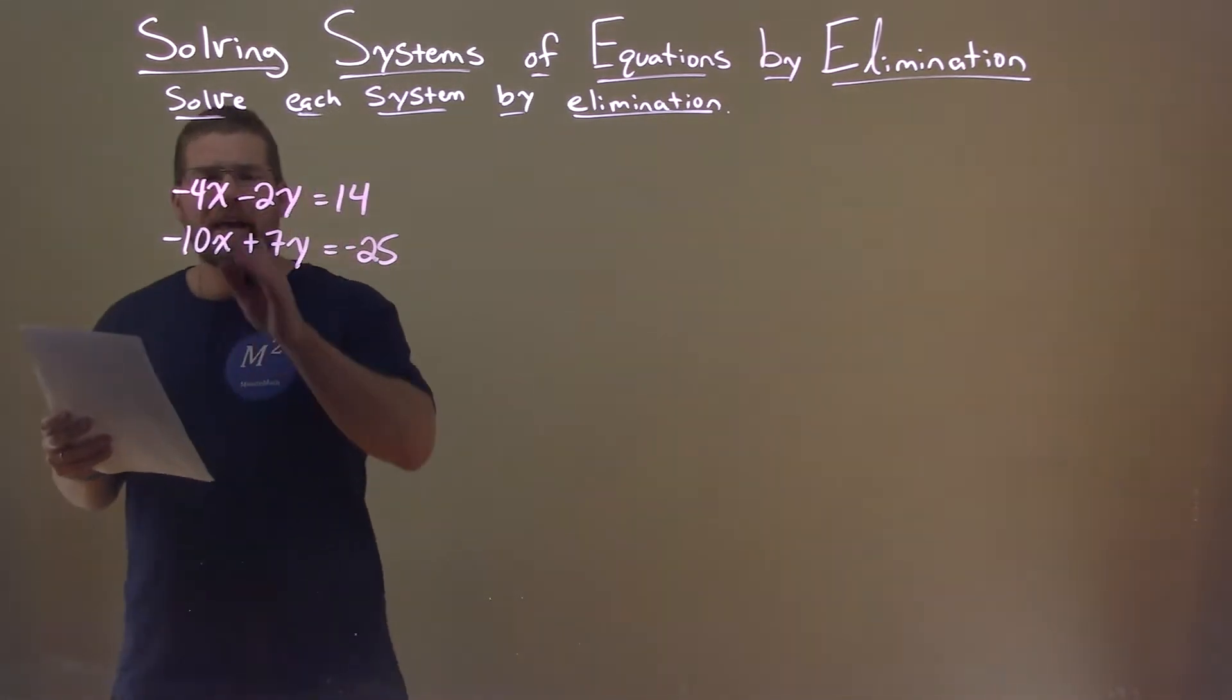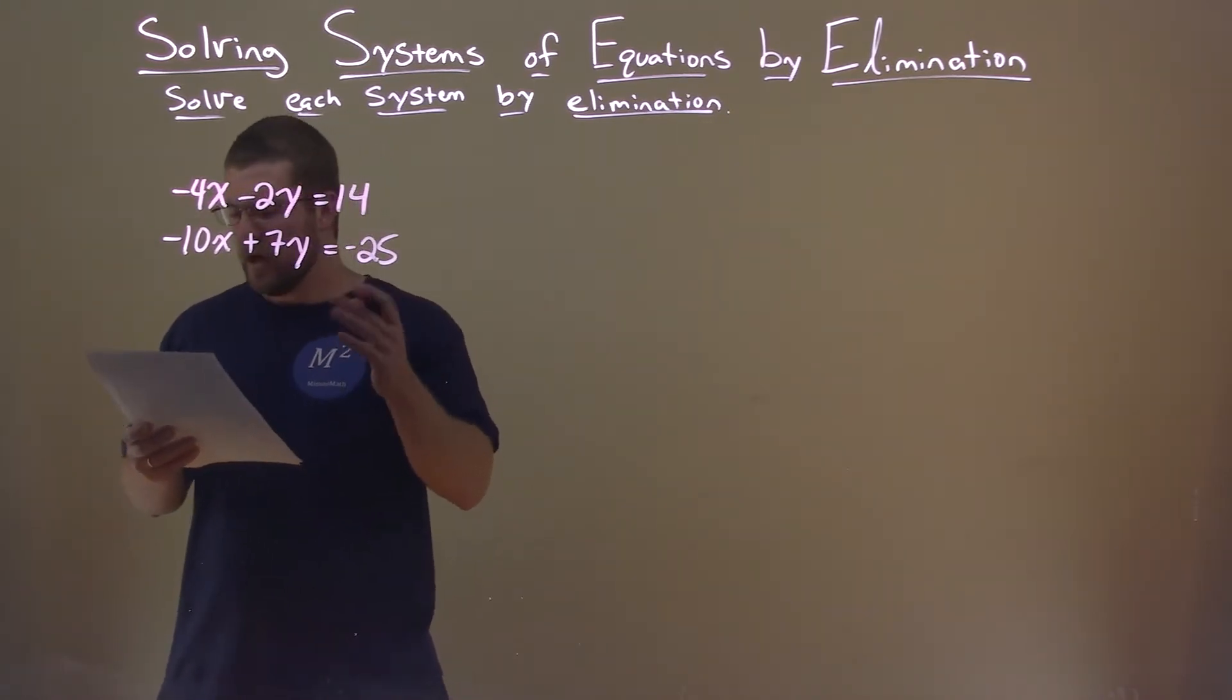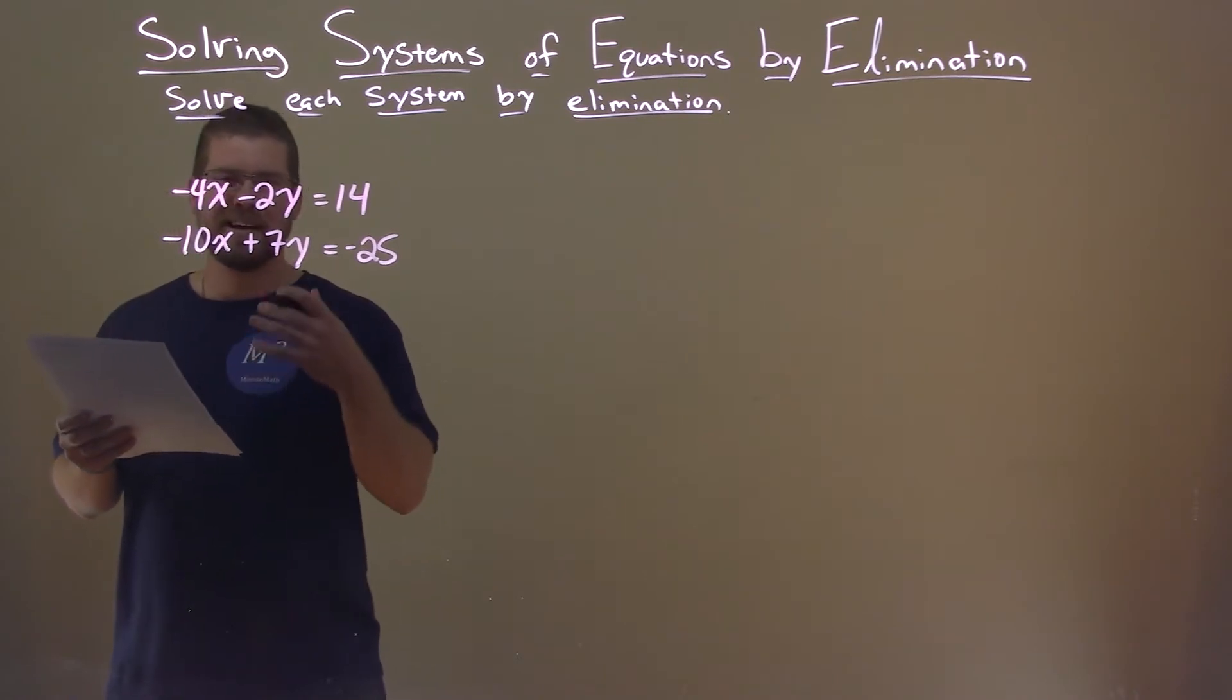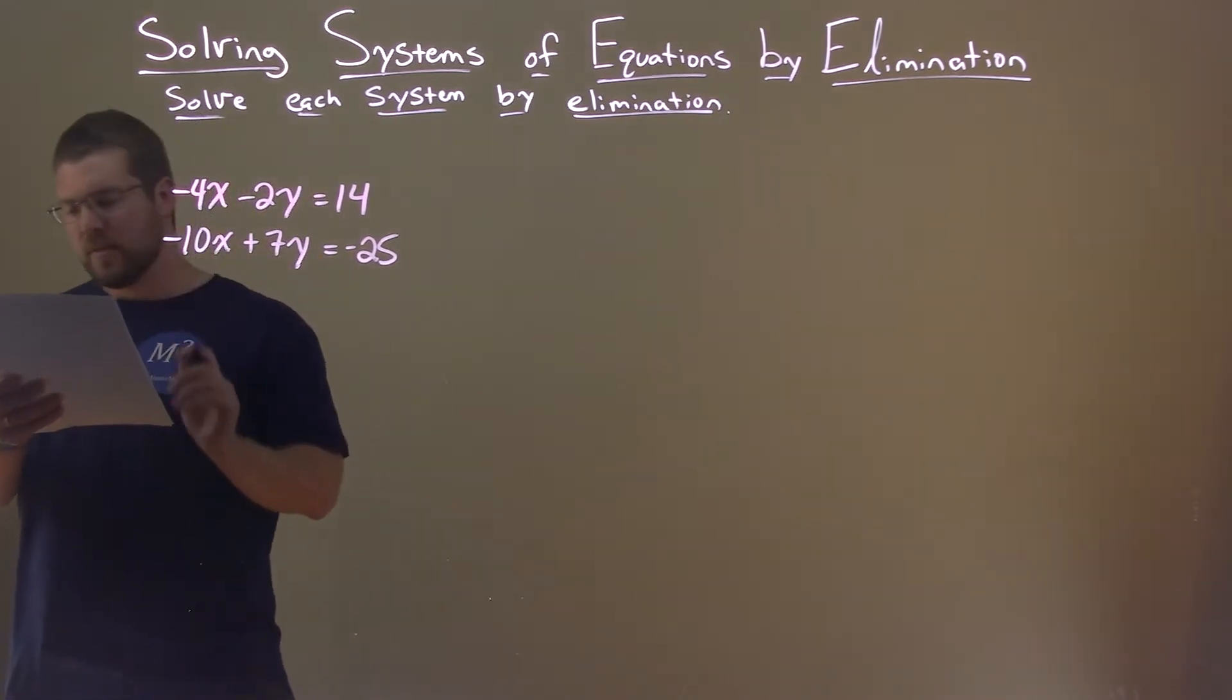Well, I can't just add these two equations right now, nothing's going to get eliminated. So we need to multiply the top equation and bottom equation by something to eliminate a variable. Let's go with the x's here.